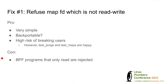The sledgehammer fix: in the verifier, refuse any map file descriptor that is not read-write. This is simple and probably backportable. The downside is there's a significant risk this could break users — though I tried this modification and the self-tests actually pass. Another downside is that there are valid programs we would reject: if a program only ever reads from a map with a read-only file descriptor, the verifier would reject that too.